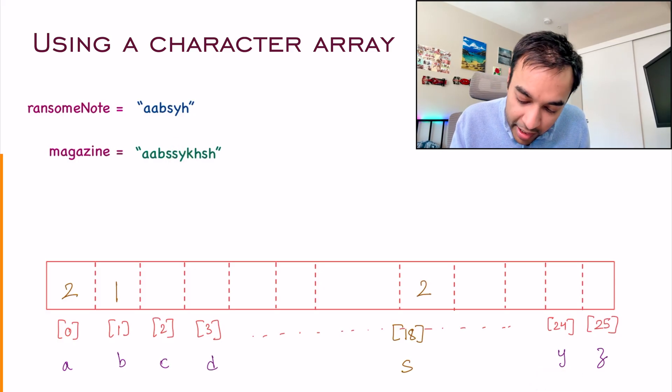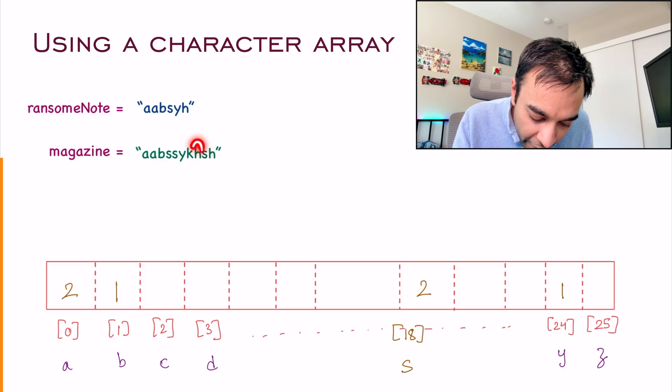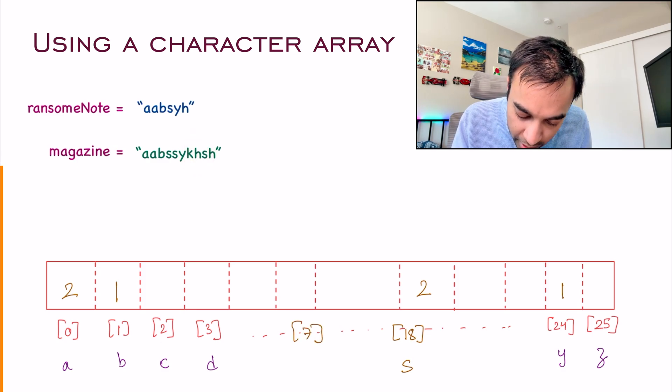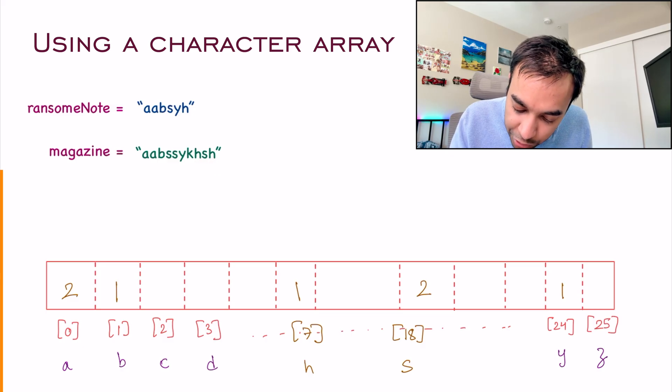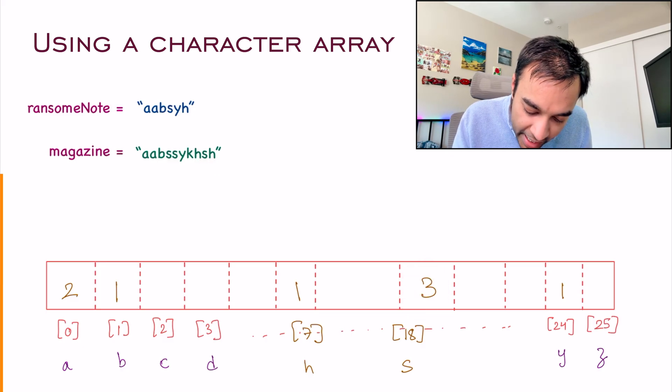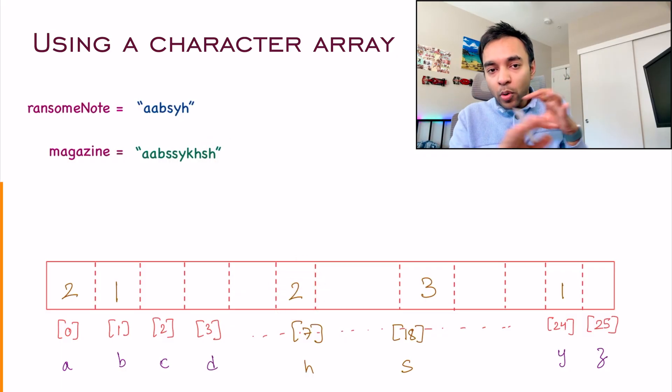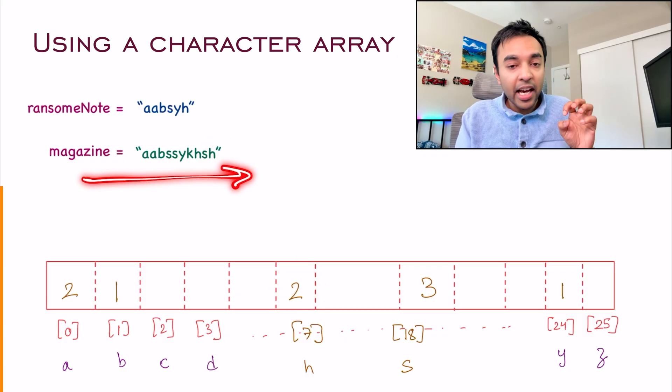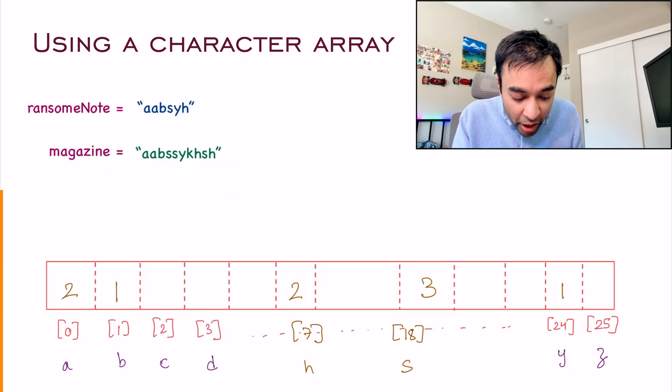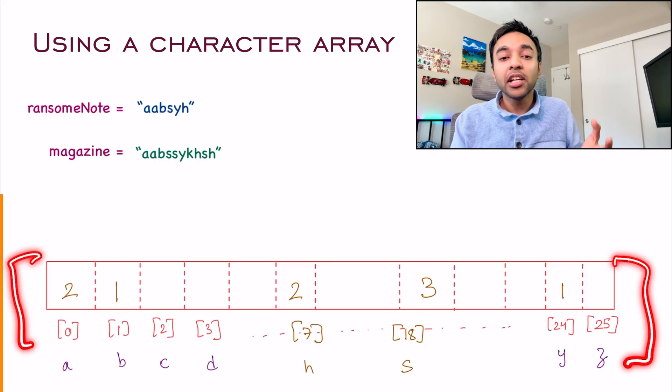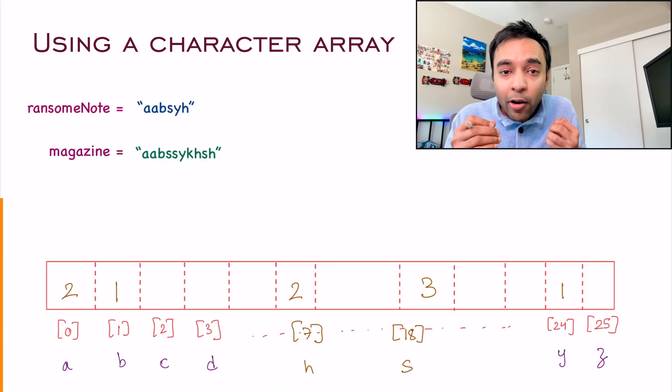Go to the next character and this time you get an S. Where will S lie? S will lie somewhere here at the 18th position. For 18, this represents S and I can just add a 1. Similarly, for the next character, I again get an S so I increment it. Then you get a Y, so I increment. Then I have an H at the 7th position. Next, I have an S again, so increment it. Then I have an H again, so I increment this value. You are now done iterating over your entire magazine string and you have stored all the information in this array.